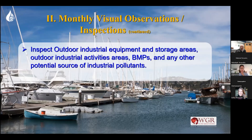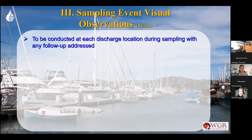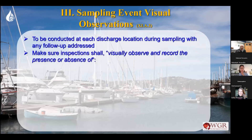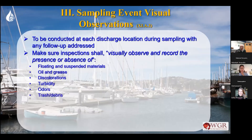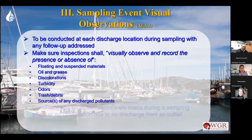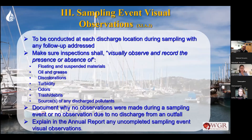You need to inspect outdoor industrial equipment and areas, look for BMPs, and consider anything that might be a potential pollutant. Now let's talk about stormwater observations. With monthly inspections, you're required once a month during a day without rain during daylight business hours. Stormwater observations are different — they need to be conducted at each discharge location during sampling.